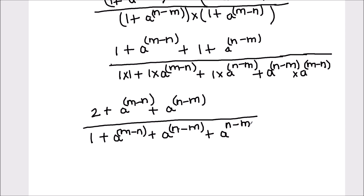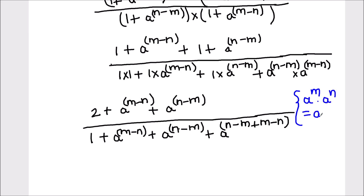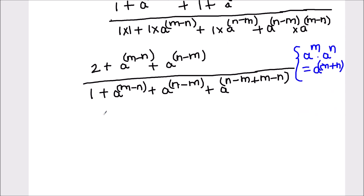That's going to be a raised to power (n minus m) plus (m minus n). Here we have used the rule: a raised to power n times a raised to power m equals a raised to power m plus n. So combining terms, we get 2 plus a raised to power n plus a raised to power n minus m in the numerator.